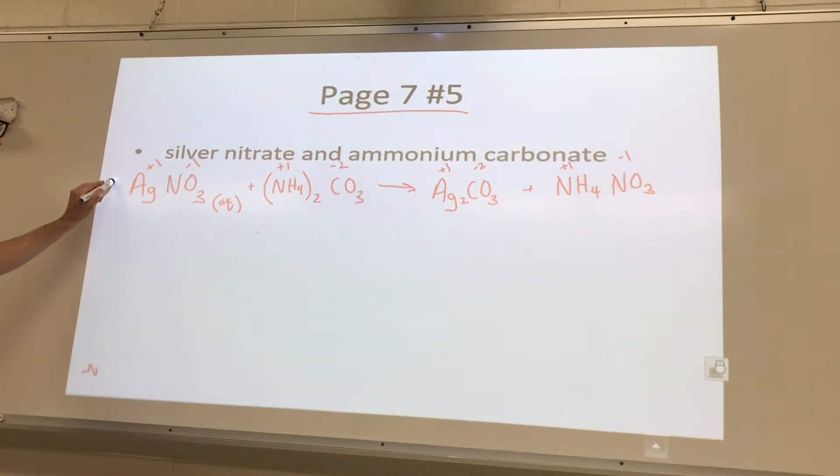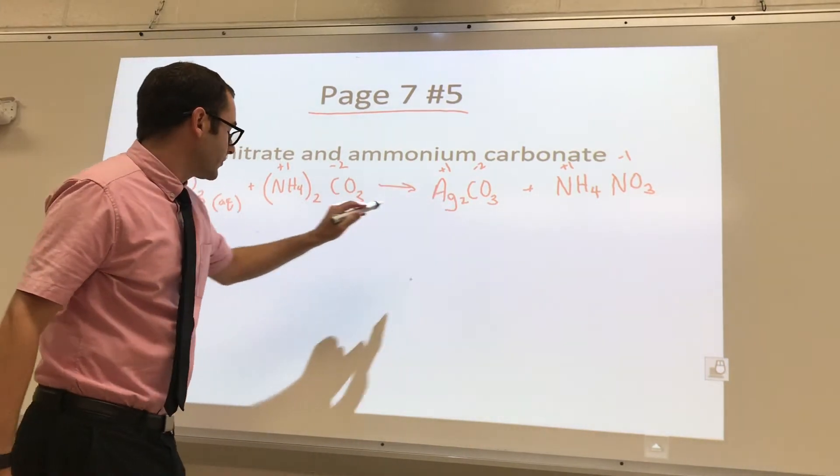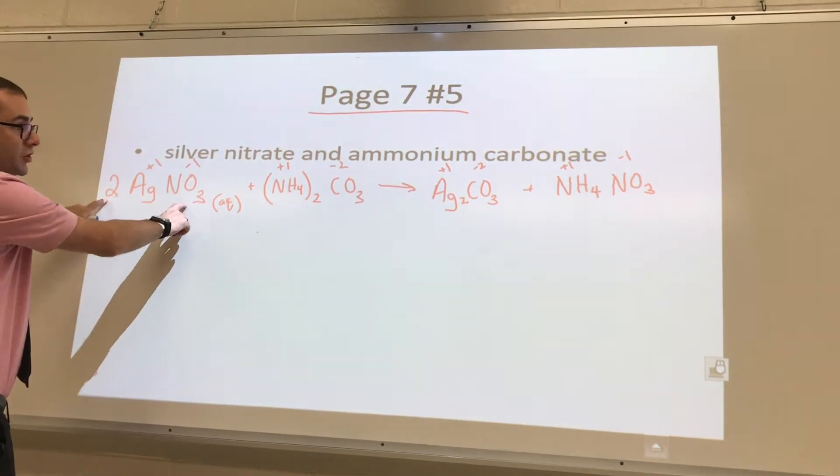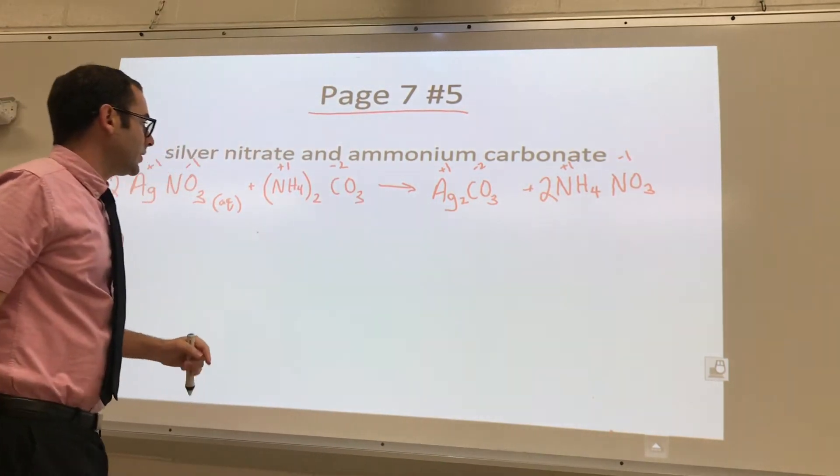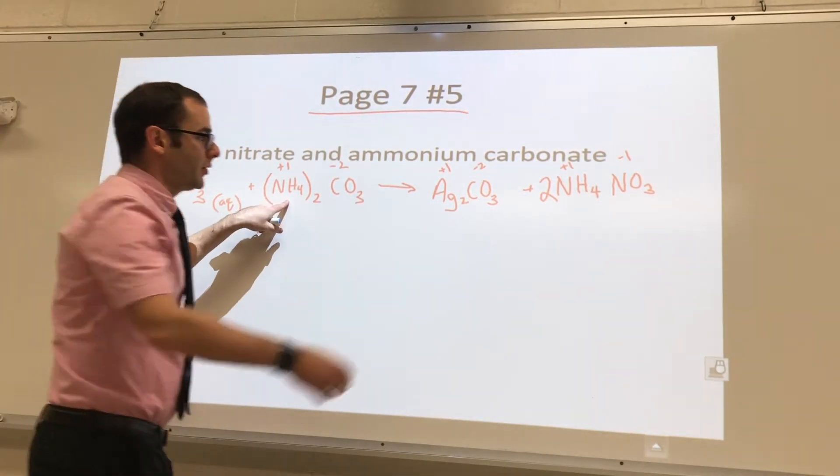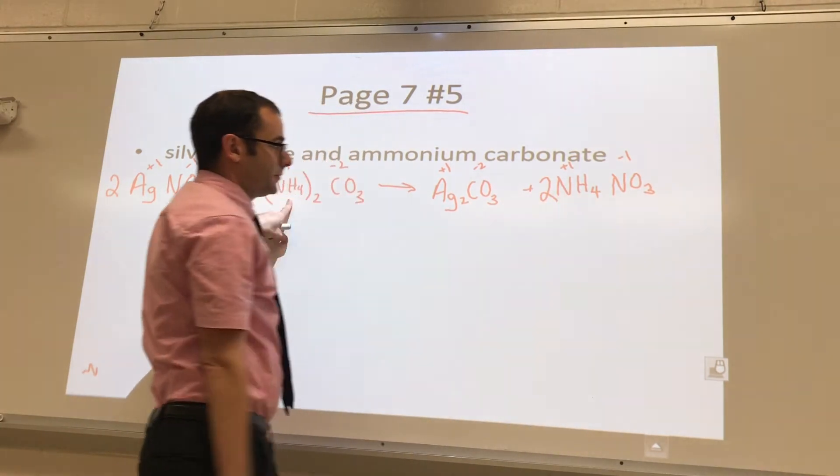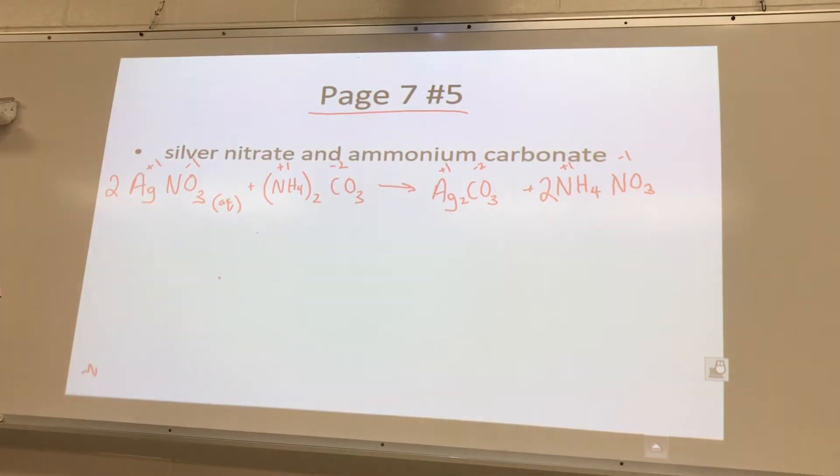Silver nitrate, good. We'll put a two here. That'll give us two silvers, two silvers, and then two nitrates. We would need a two there as well. And there's two ammonium as well. So now it's balanced. We're just about done. Everybody cool with that part?